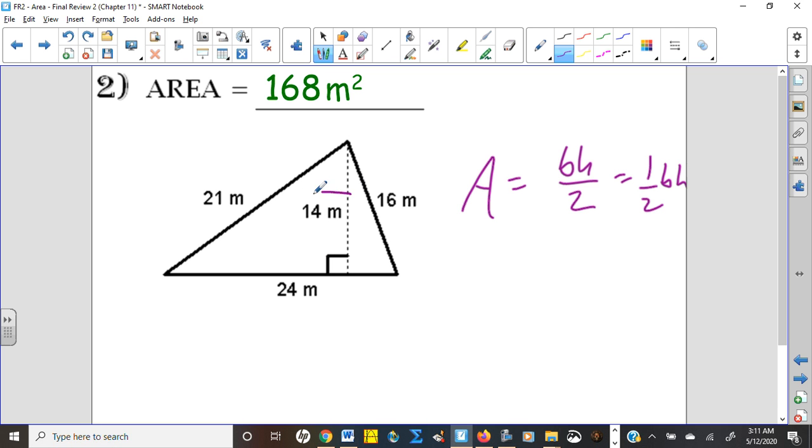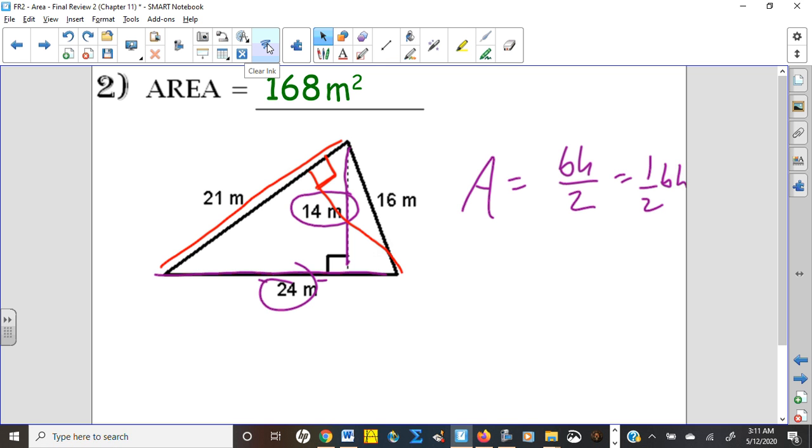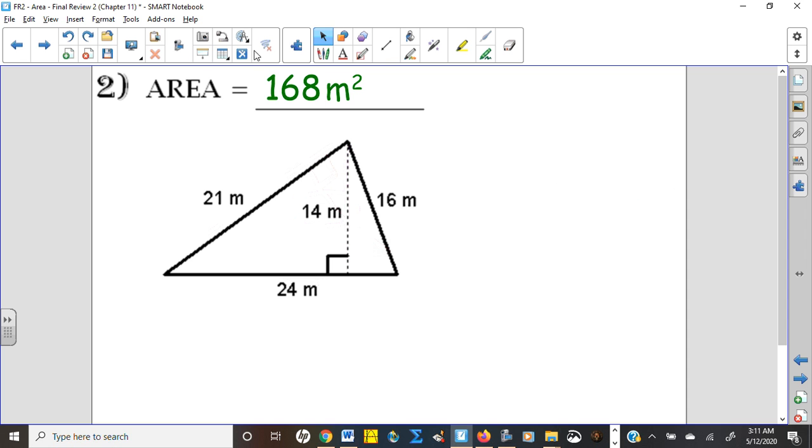The big thing here is once you know which side your height is perpendicular to, that has to become the base. Any of these three sides could be the base. If 21 was my base here, I would need a perpendicular segment coming through here to be my height. It should give you, you know, would give you the same area. The triangle is not going to change its area just because you're using a different perspective. So always make sure you choose the correct base and height as you go through that. So 24 times 14 divided by 2 is 168.